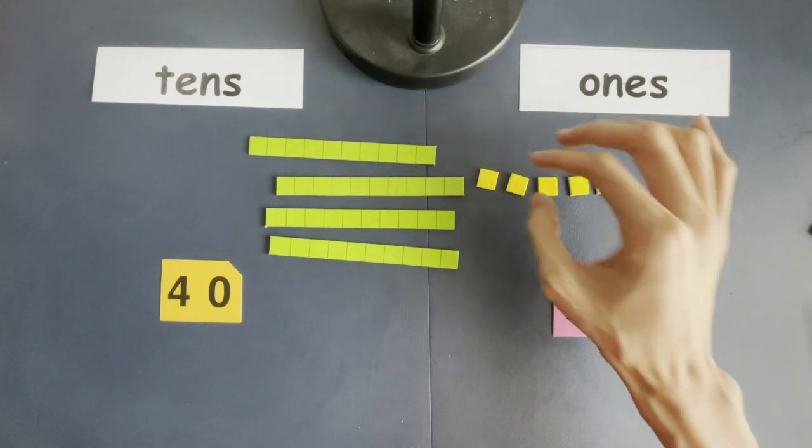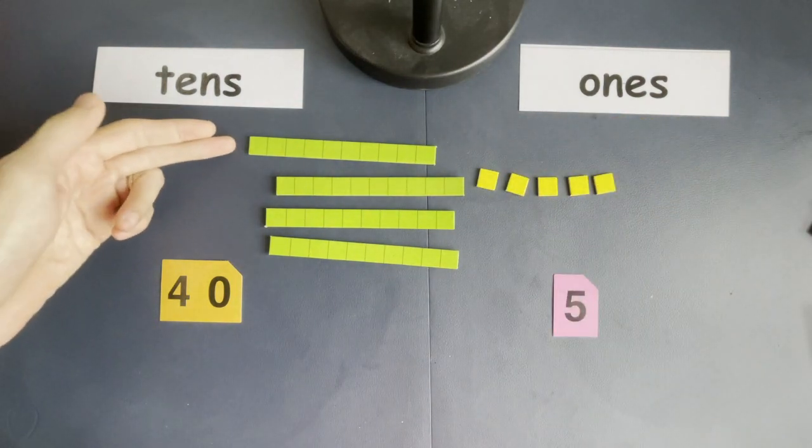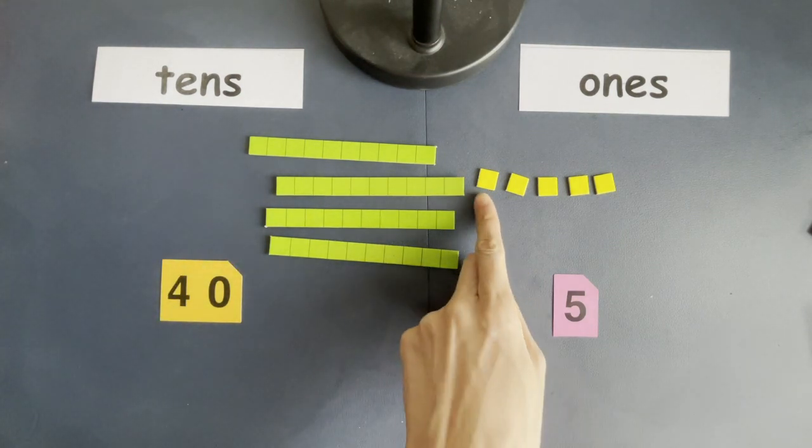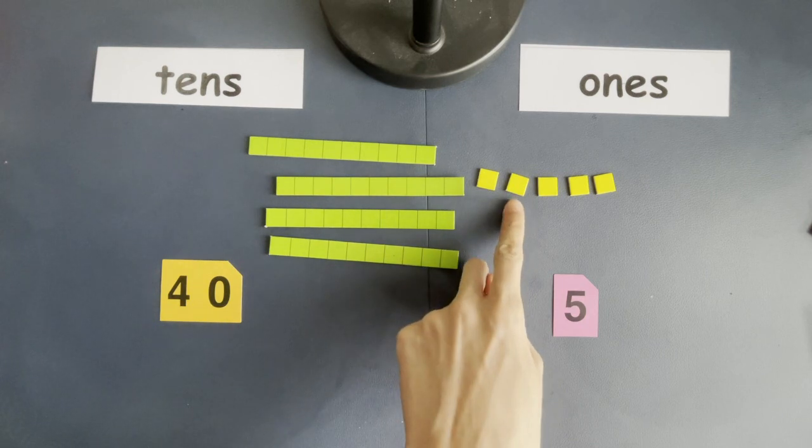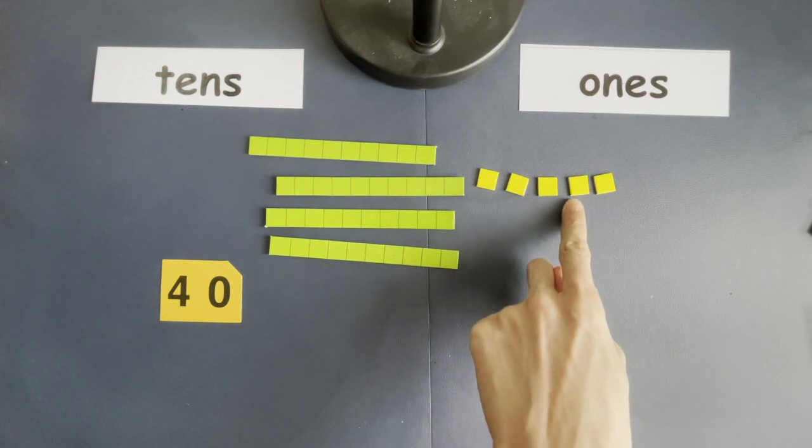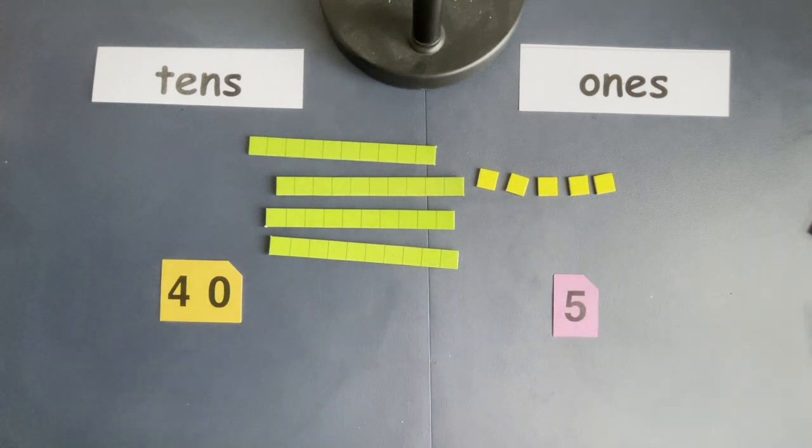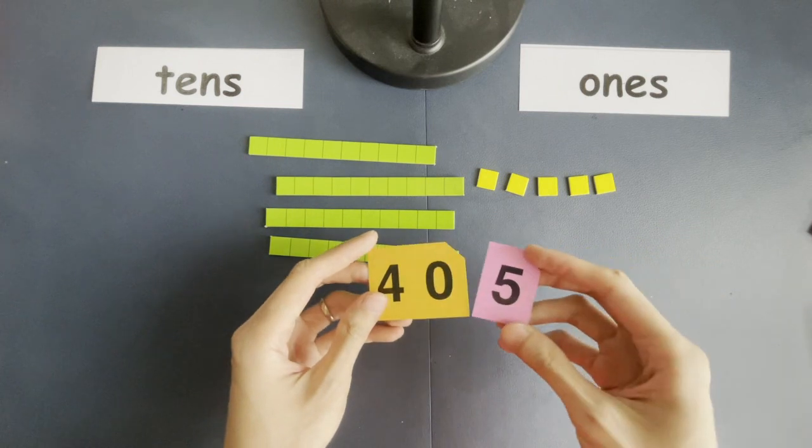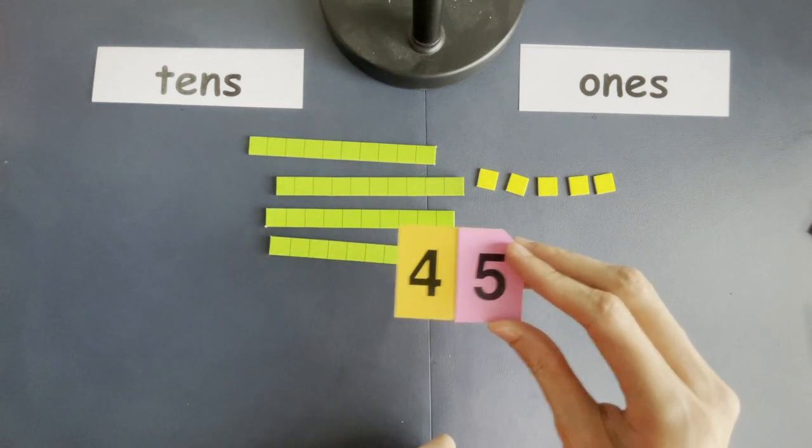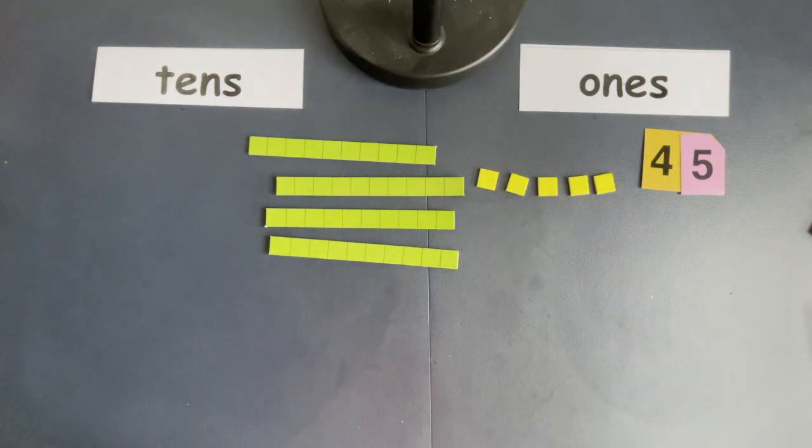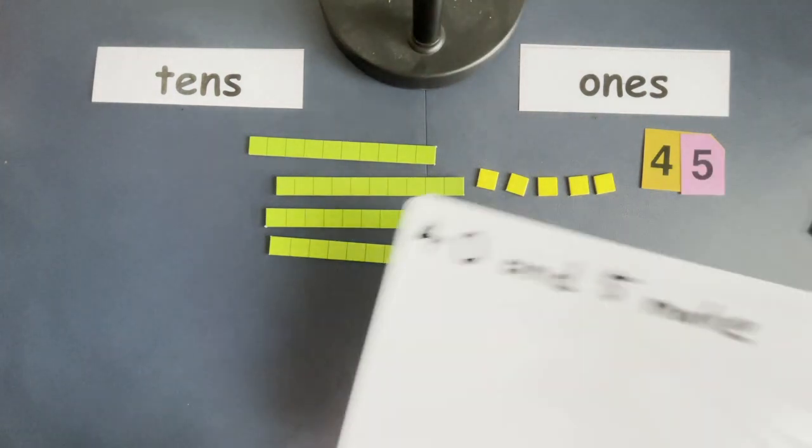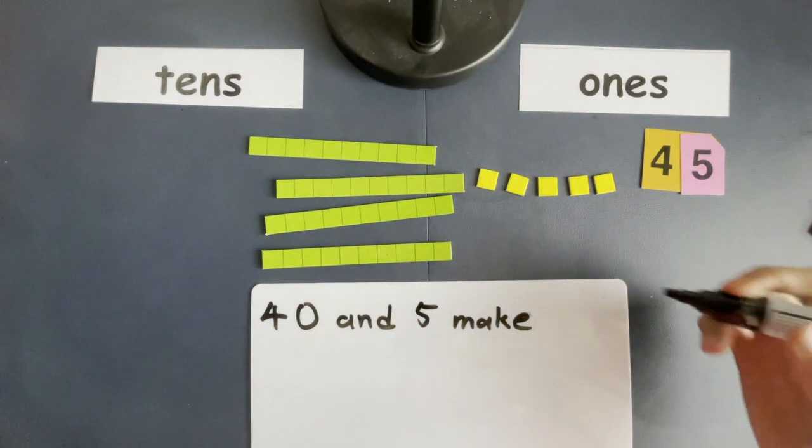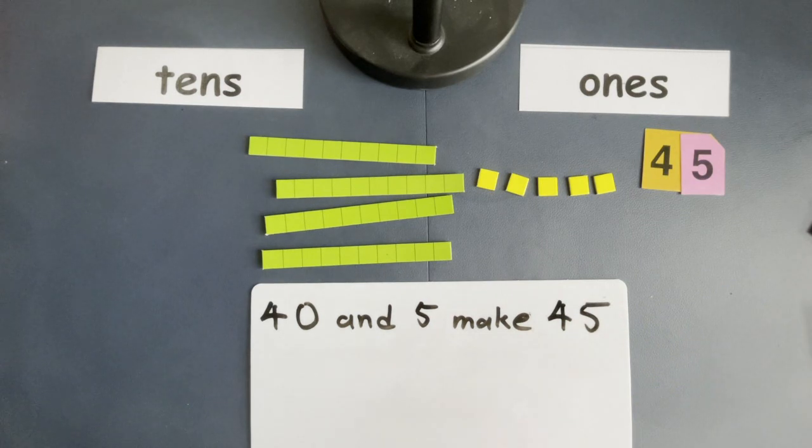So what does forty and five put together make? What new number does it make? Ready to count? Ten, twenty, thirty, forty, forty-one, forty-two, forty-three, forty-four, and forty-five. So the new number is forty-five. Forty and five put together makes forty-five. And how do we write that down? Let me show you. Forty and five makes forty-five. And there you go.